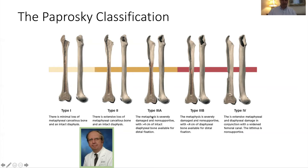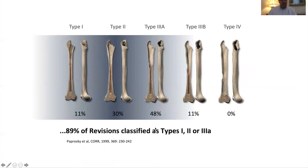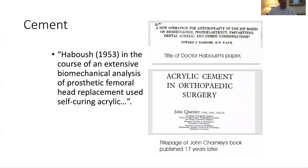The main point is that 90% of the revisions you want to undertake for the femur are really going to be types 1, 2, or 3A.